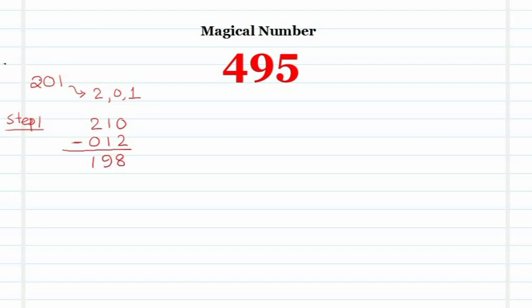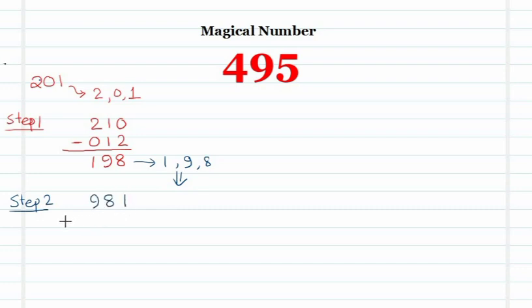The difference is 198. The digits in 198 are 1, 9, and 8. Form the largest number: 981. Form the smallest number by reversing: 189. Find their difference: 792.